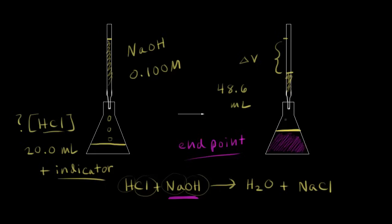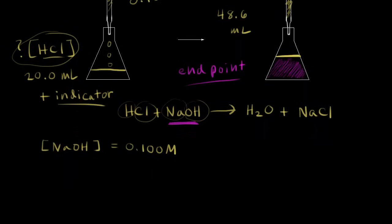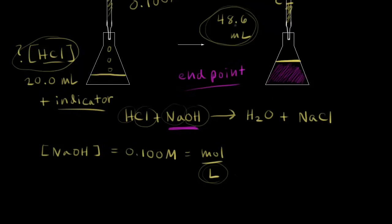We can now calculate the concentration of the HCl. We started with a 0.100 molar solution of sodium hydroxide. Molarity is equal to moles over liters, and our goal is to figure out how many moles of base we used to neutralize the acid. We take our volume of 48.6 milliliters and convert it to liters by moving the decimal three places to the left, giving us 0.0486 liters.